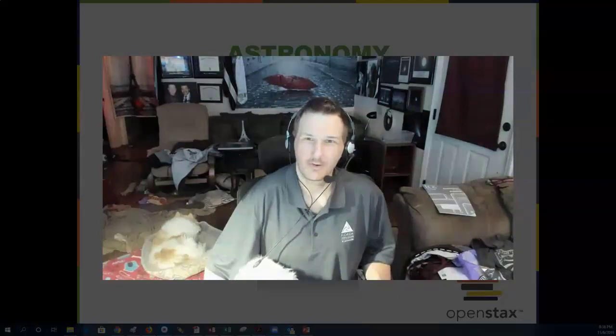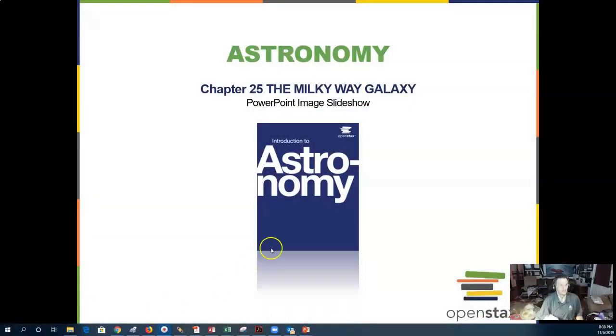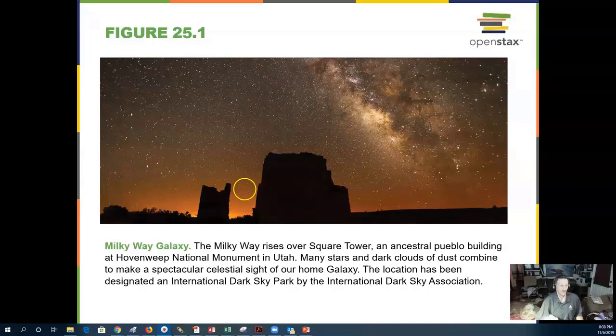Hello, this is Professor Jim Caffey, and today we are going to do Chapter 25 on the Milky Way Galaxy. Here we see the Milky Way Galaxy over Square Tower, which is in Utah, part of the International Dark Sky Park.